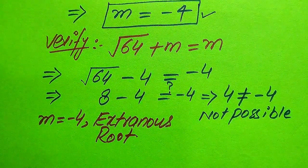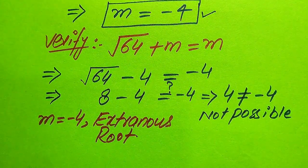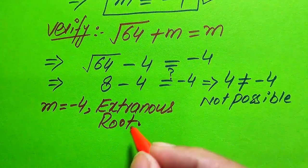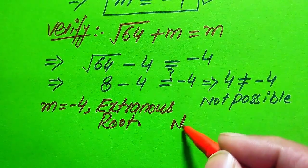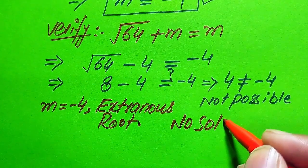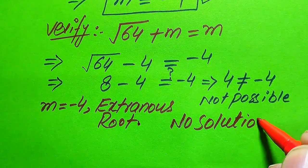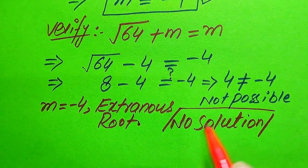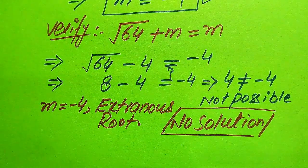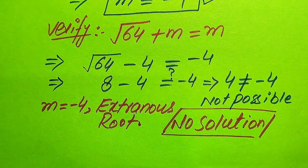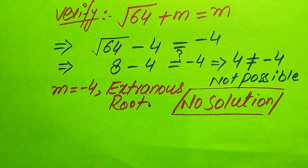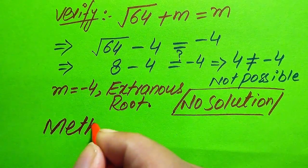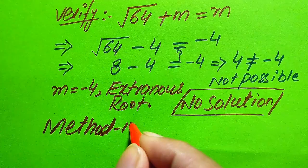We conclude that this equation has no solution, because we cannot find any value of m that satisfies the given equation. This is the final answer from the first method.